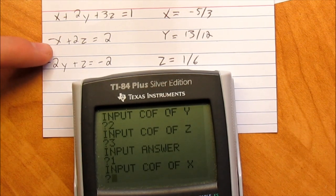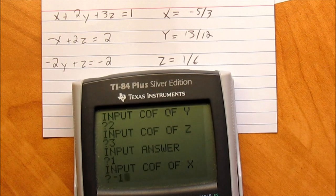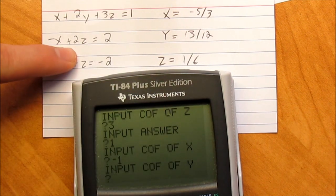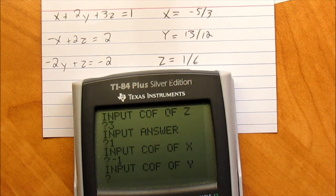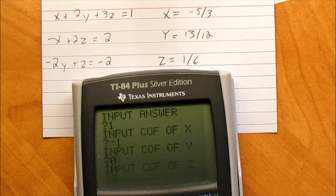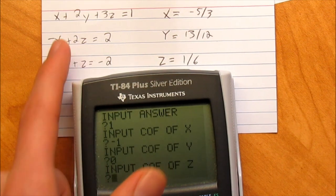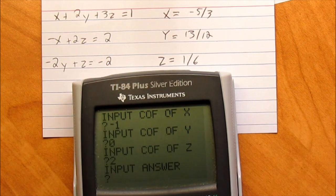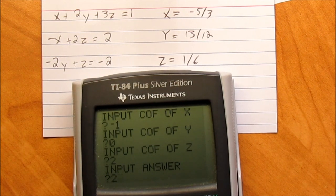Alright, so this time we have a negative x. So that's negative 1. Okay, it says input coefficient of y. But in this equation, there is no y. So what you do is you just put 0. And then you hit enter. And then you have 2z's. So 2. And then the answer is 2. So go ahead and put that in.